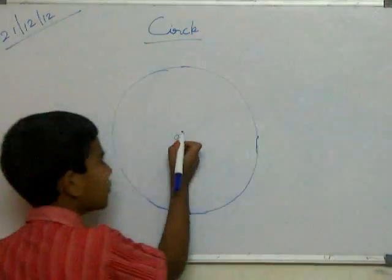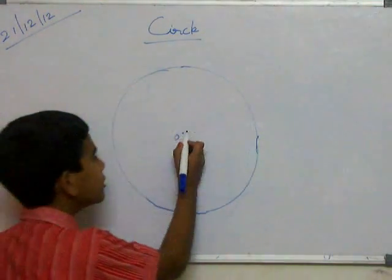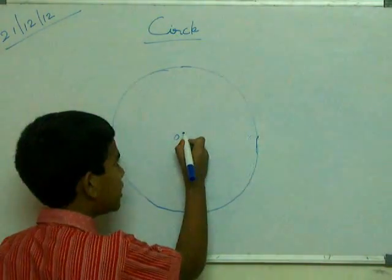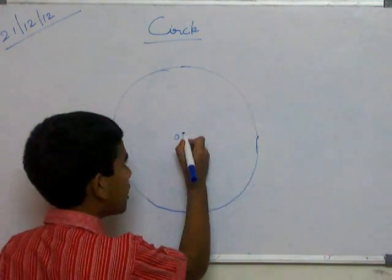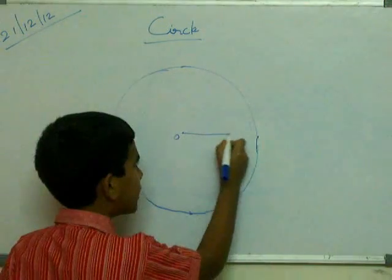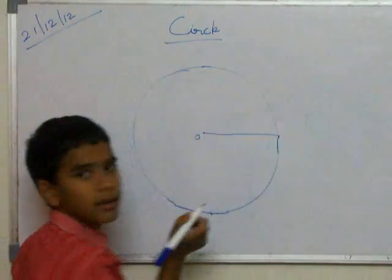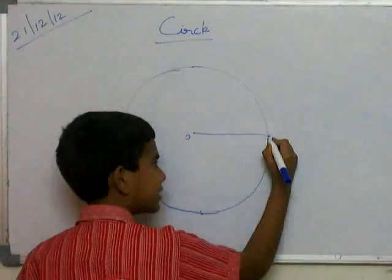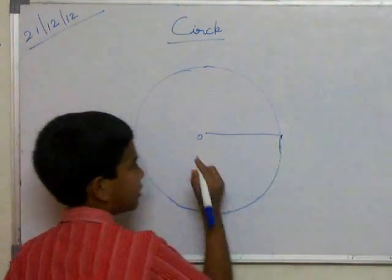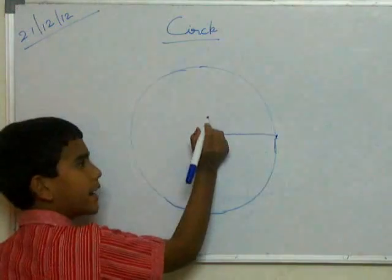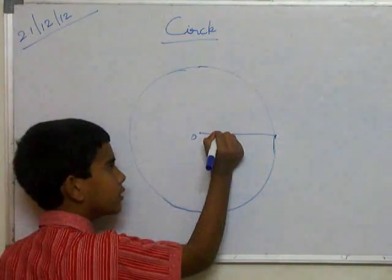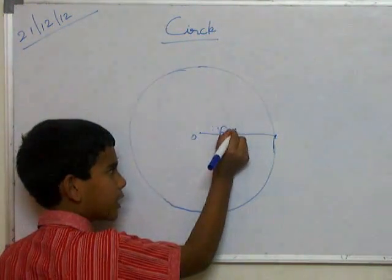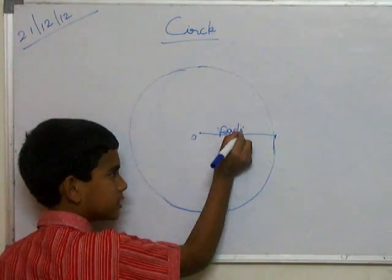Radius — we should first draw a straight line from the center of the circle. This is the ending point. We should write here: radius.